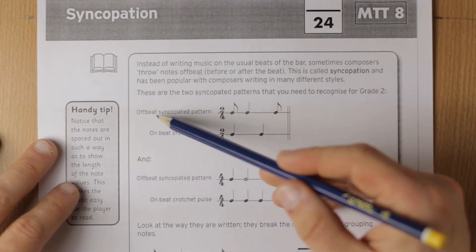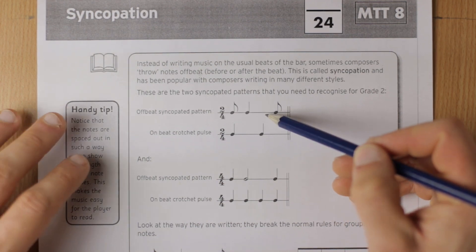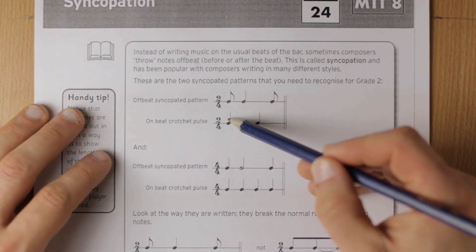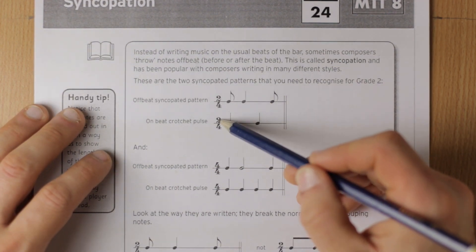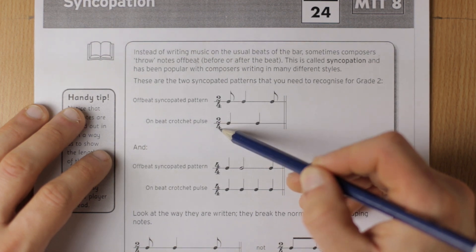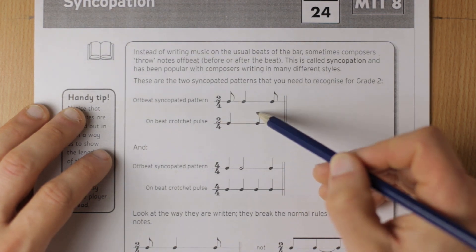So we've got this first syncopated rhythm, this is an offbeat rhythm here, and it's good to compare this with this onbeat rhythm. We've got a time signature of two crotchet beats per bar. So here's the first beat and here's the second beat.